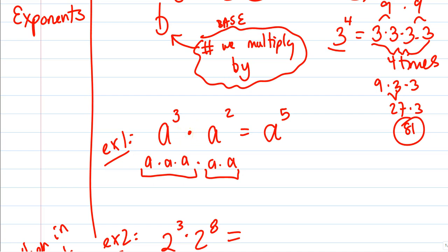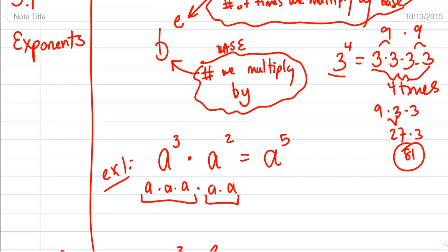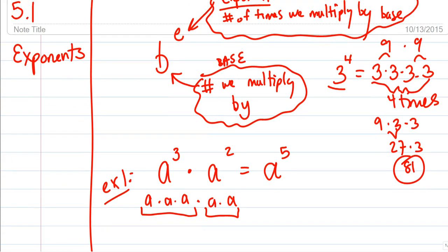Why do we add the exponents? Because the exponents are how many times we are multiplying. So we are not just adding two numbers — we are adding how many of the a's we are multiplying by. It's not an addition problem. Beware.